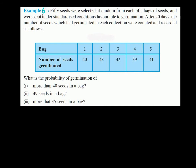The question says: 50 seeds were selected at random from each of 5 bags of seeds and were kept under standardised conditions favourable to germination. After 20 days, the number of seeds which had germinated in each collection were counted and recorded. We need to find out the probability of germination of more than 40 seeds, and 49 seeds in a bag.